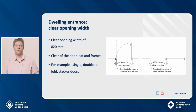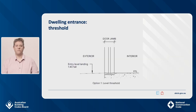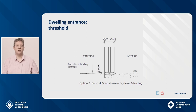The standard provides options for complying with the threshold requirements for an entrance door. The first option is a level threshold with a rebated door threshold sill. Another option is to have a door sill height that is no more than 5 mm with a rounded or bevelled edge. The third option is to provide a ramped threshold — maximum 1 in 8 gradient — within the depth of the door jamb, between the entry landing and the inside floor level.